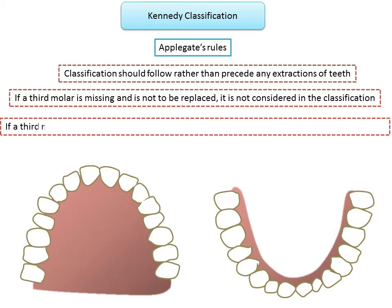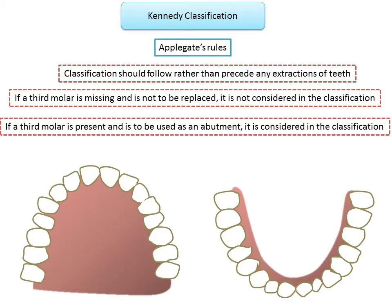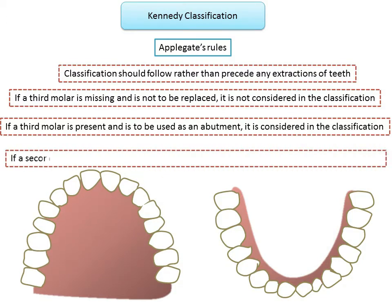Rule 3: if the third molar is present and is to be used as an abutment, it is considered in the classification. If the third molar is missing and you are not replacing it, you don't consider it in the classification because it would change the classification, but if it is present and used as an abutment, it must be considered.